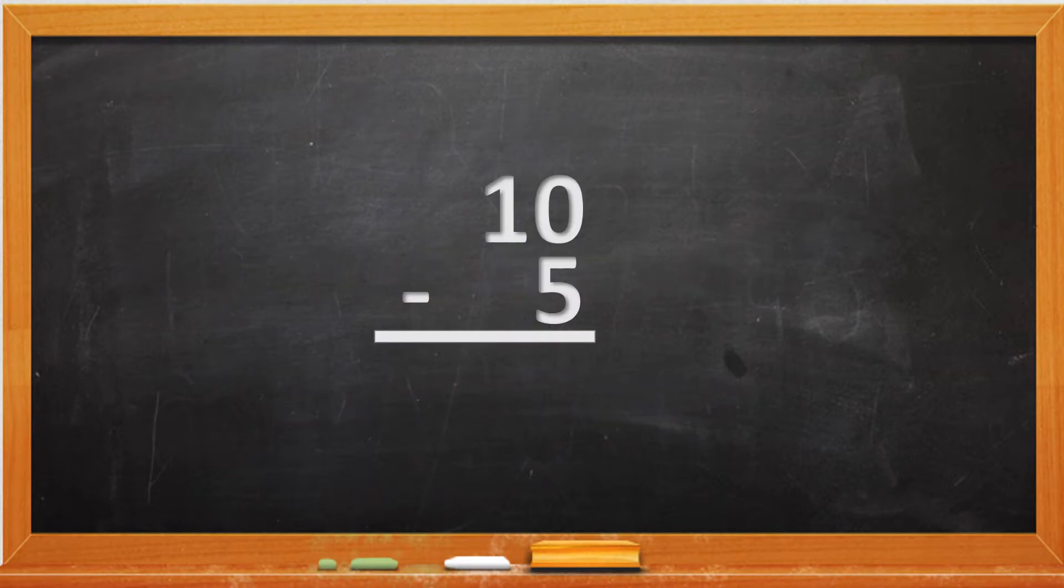So, we have 10 minus 5, and this is the wrong way to do it, where we take 0 minus 5 and we write 5.